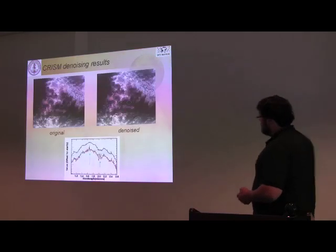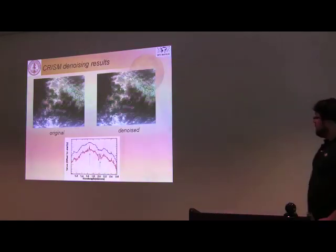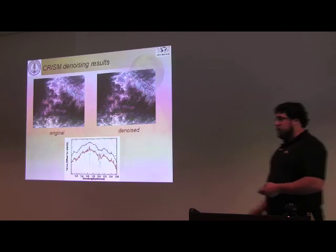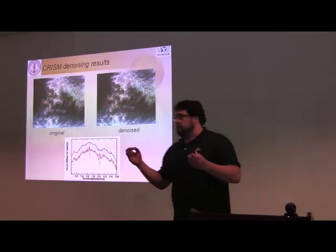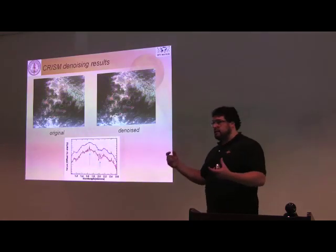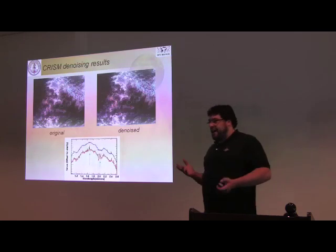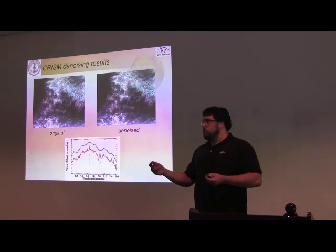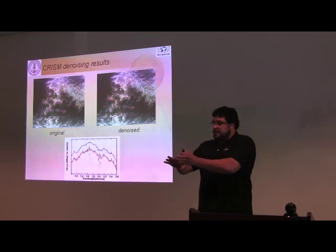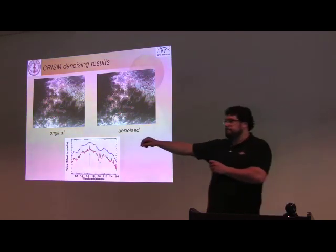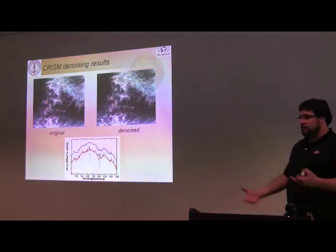Once we are done with denoising, we have an image cleaned such that we have probably usable spectra. We still have problems if we want a complete spectrum in each pixel between 0.3 and 3.9 micrometers. Why? Because CRISM actually has two detectors — one that goes from 0.3 to about 1 micrometer, and another, the L detector, covering longer wavelengths between 1 and 3.9 micrometers, with a little overlap.